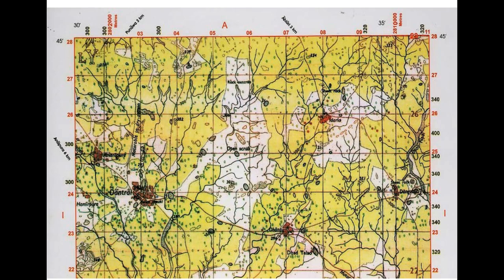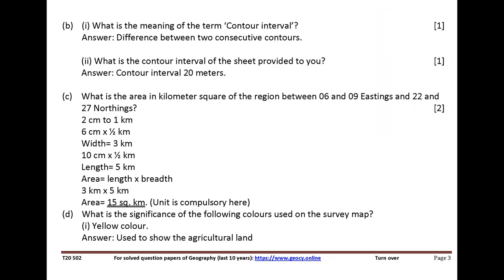What is the area in square kilometers of the region between 06 and 09 eastings and 22 and 27 northings? Answer: 15 square km.